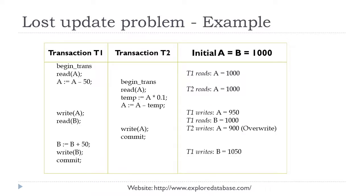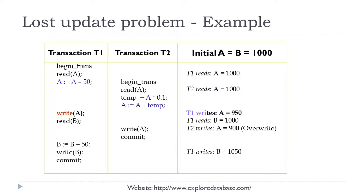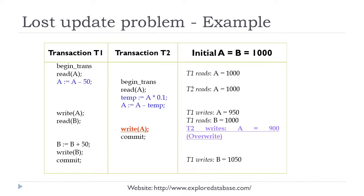We will discuss this with an example. Transaction T1 starts a bit earlier than T2, with initial values for data items A and B equal to 1000. As the first instruction, T1 reads the value of A — it sees the old value, 1000 — then performs some operation. Then T2's read instruction comes; it reads A as 1000 and does some operation. Now T1 writes its new value of A as 950, then executes some other instructions. Then T2 also writes the value it produced: 900 for A.